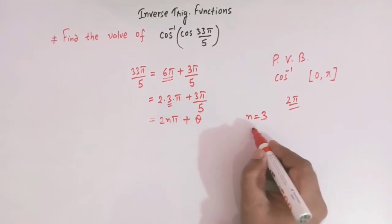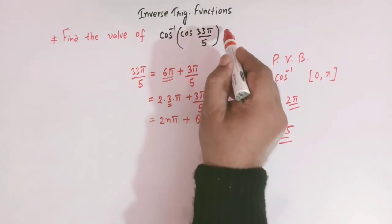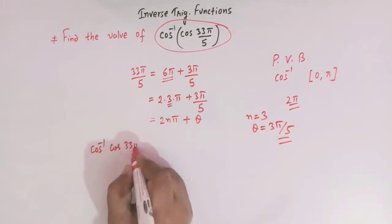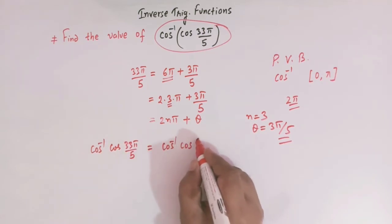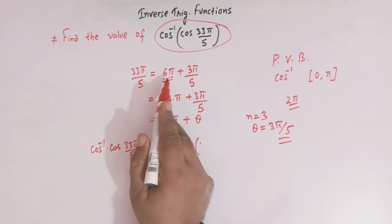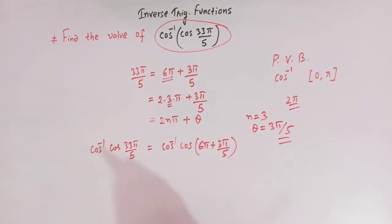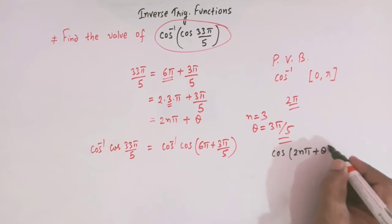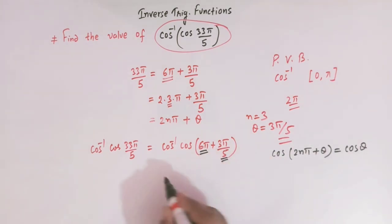Here n = 3 and θ = 3π/5. Now this expression becomes cos inverse of cos(2nπ + θ). Using the identity cos(2nπ + θ) = cos θ, the expression simplifies to cos inverse of cos(3π/5).